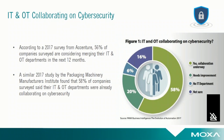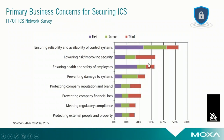Here are two studies on this trend. One by Accenture shows 50% of companies surveyed are considering merging their IT and OT departments in the next 12 months — and that was from last year, so theoretically that could be happening right now. A similar 2017 study done by PMMI found that 58% of companies surveyed said their IT and OT departments were already collaborating on cybersecurity. When looking at the top business concerns for securing industrial control systems, ensuring reliability and availability remains the number one concern, followed by ensuring health and safety of employees. Notably, improving security has risen into the top three from eighth place just a few years ago.